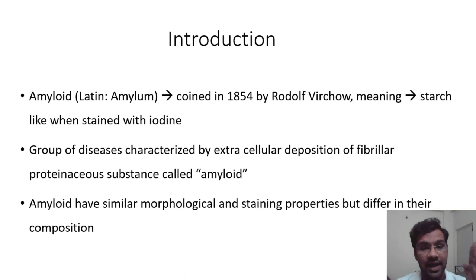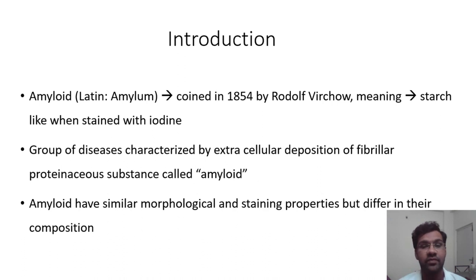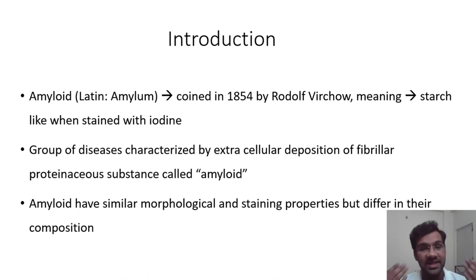Amyloid is derived from the Latin word 'amyloid,' coined by Rodolphe Virchow. When he was staining cells, he found it to be starch-like when stained with iodine-type dyes, so he coined the term amyloid. The basic definition: amyloidosis consists of a group of disorders characterized by extracellular deposition of a proteinaceous substance called amyloid.